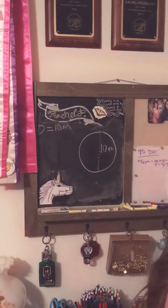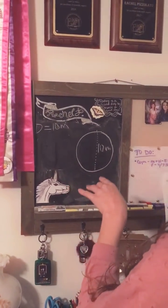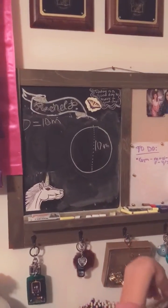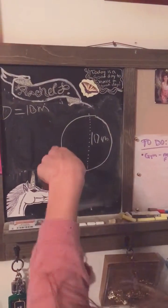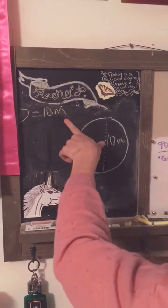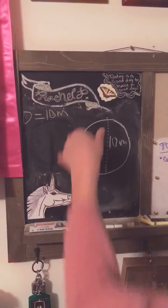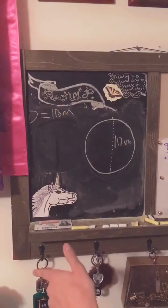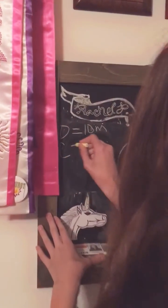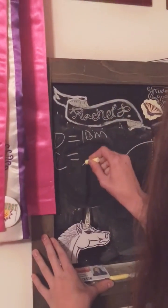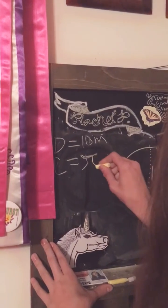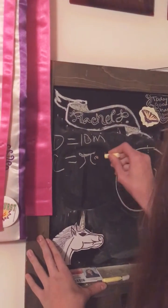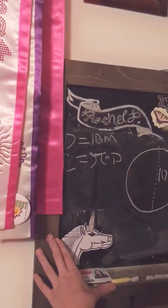Well, we know that the circumference is the distance around the circle. So we know that the diameter is 10 meters. And the formula for the circumference — let's write this down — is c equals pi times diameter.